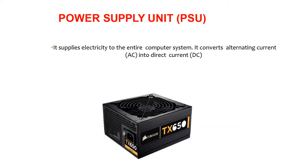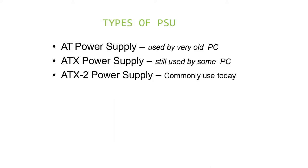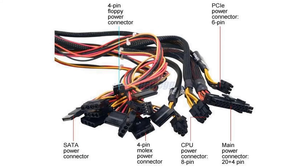Another integral part of a computer system is the power supply unit, which supplies electricity to the entire computer system and converts alternating current into direct current. There are three types: AT power supply, used by very old PCs; ATX power supply, still used by some PCs; and ATX2 power supply, which is the most commonly used today. Here's a look at the different connectors used in the computer system.